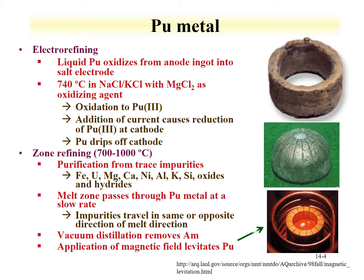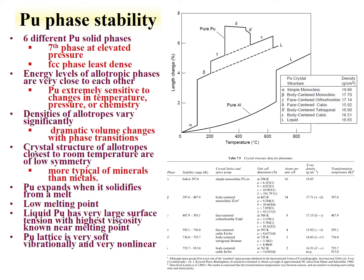Another purification route is vacuum distillation of americium, which is produced from the decay of Pu-241 in a plutonium sample. The plutonium metal can be levitated in a magnetic field and heated until it becomes liquid. By placing this under vacuum, the americium can be distilled off, leaving behind very pure plutonium metal typically used for fundamental experiments.